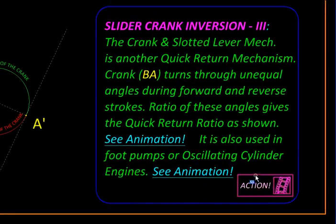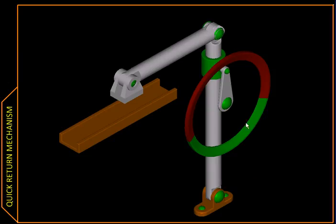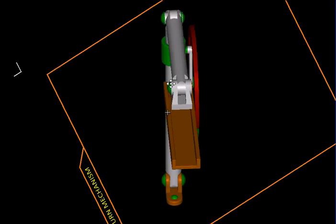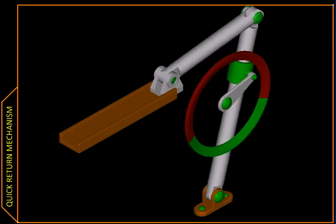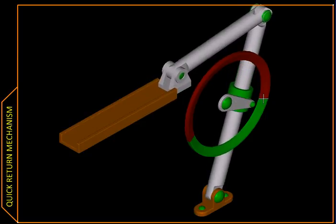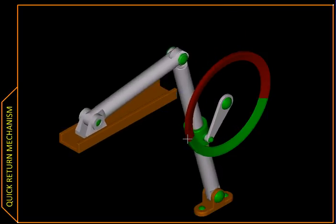There are two manifestations. First we will see the crank slotted lever quick return mechanism. So this is how it looks in 3D. We have marked these angles: the green is the return stroke and red, which is a larger angle, is the forward stroke.